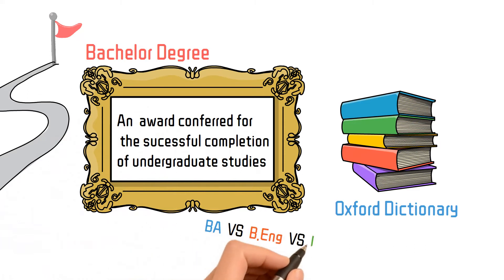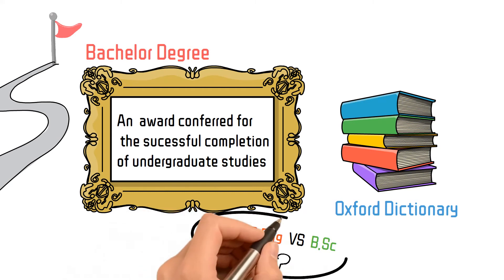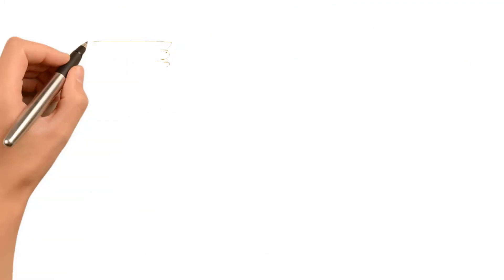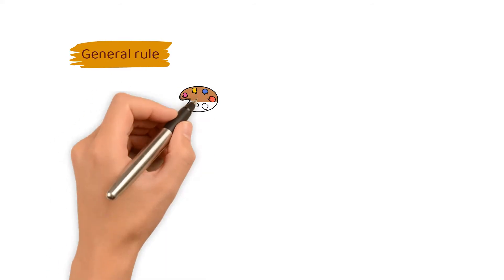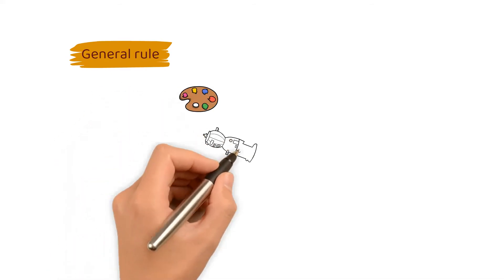Well, here is the general rule. Actually, the difference between BA, B.Eng, and B.Sc lies in the specificities of the branches.